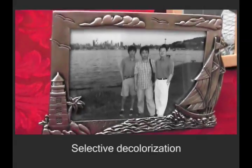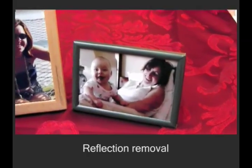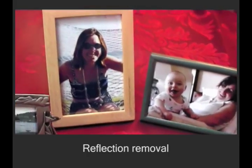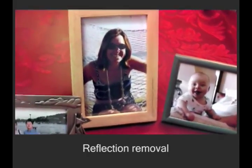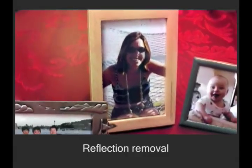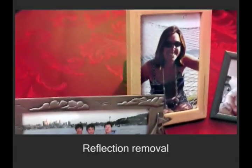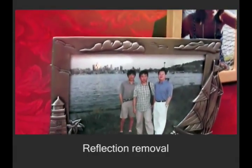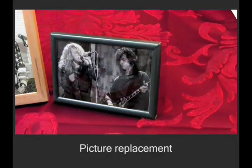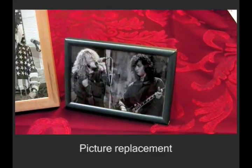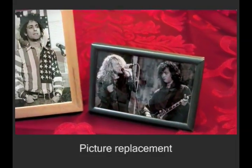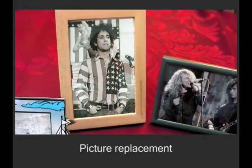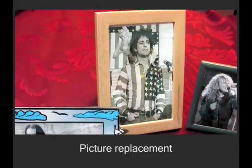In the input video, the pictures contain reflections. These artifacts can be removed by inserting a reflection-free picture in each mask. Conversely, we can preserve the reflections recorded in the original video while replacing the pictures. We've also edited the last picture frame in this example.